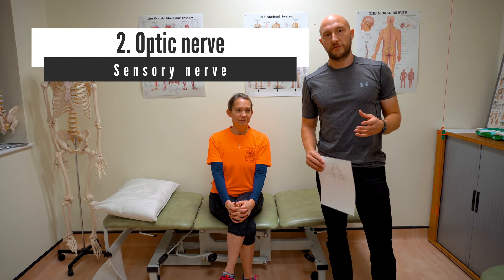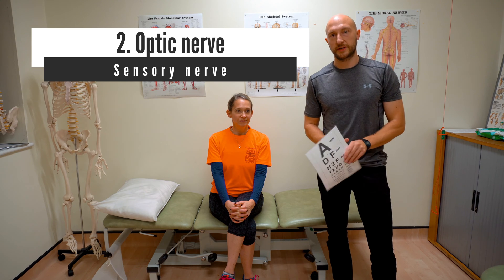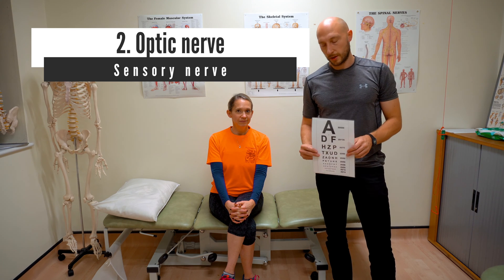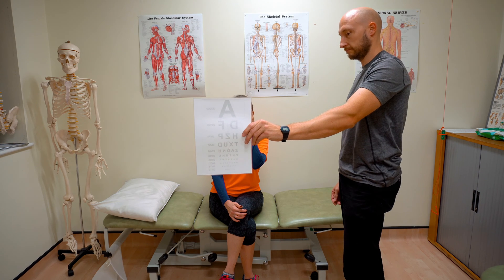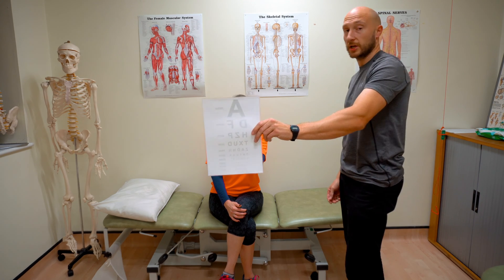Our second cranial nerve test is for the optic nerve. The first test uses a Snellen chart — ask the patient to close one eye and read the third line down. You compare from one side to the other and can observe for any nystagmus or abnormalities. It's about asking the patient to read the letters and whether one eye performs the same as the other.